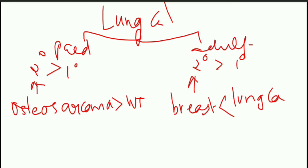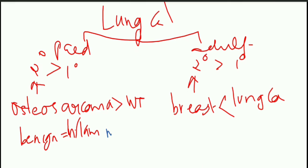When you consider primary tumours, which is the most common benign primary tumour? The most common benign primary tumour in children is inflammatory myofibroblastic tumour. In the case of adults, the most common benign primary tumour of the lung is hamartoma.